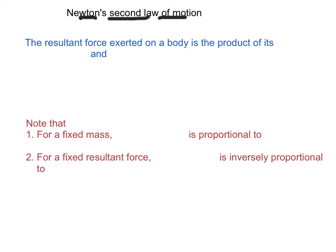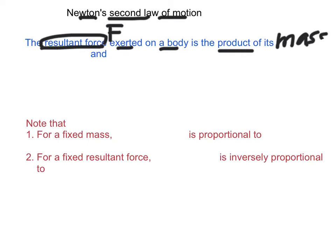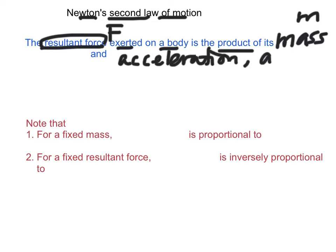Newton's second law of motion states that the resultant force F exerted on a body is the product of its mass M and its acceleration A. That is, F equals MA.